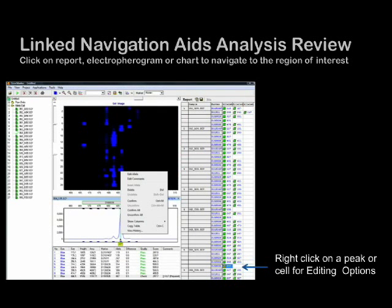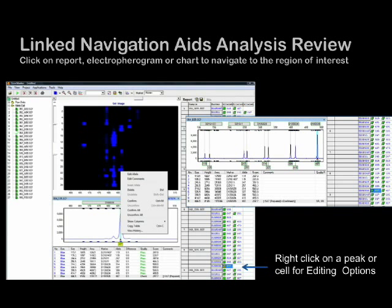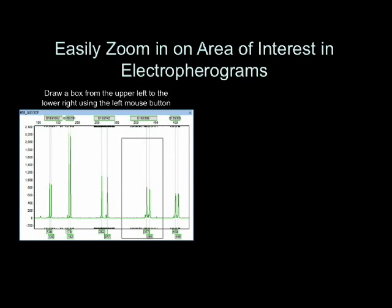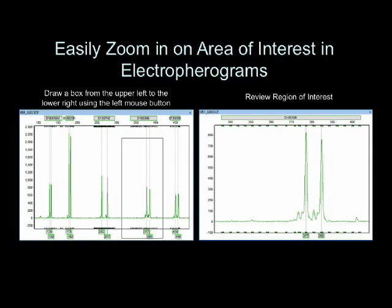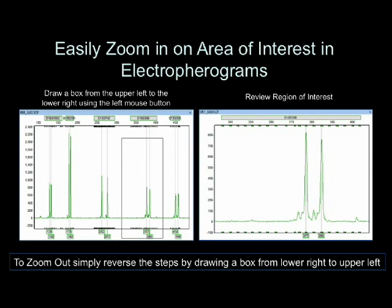Returning to the main analysis window, linked navigation aids in analysis review. Right-click on a peak or the cell of the report for editing options. The program automatically records any edits and updates the allele label, electropherogram chart, and report table, as seen in this image of the screen after confirmation of allele 487. To zoom in on an area of interest in the electropherogram, draw a box from the upper left to the lower right. To zoom out, simply reverse the steps by drawing a box from the lower right to the upper left.